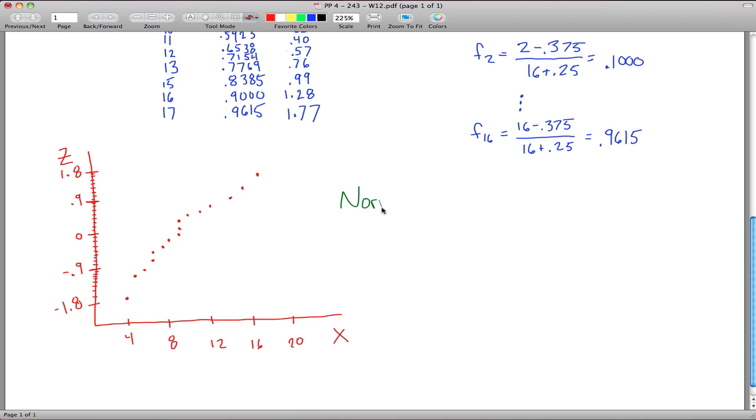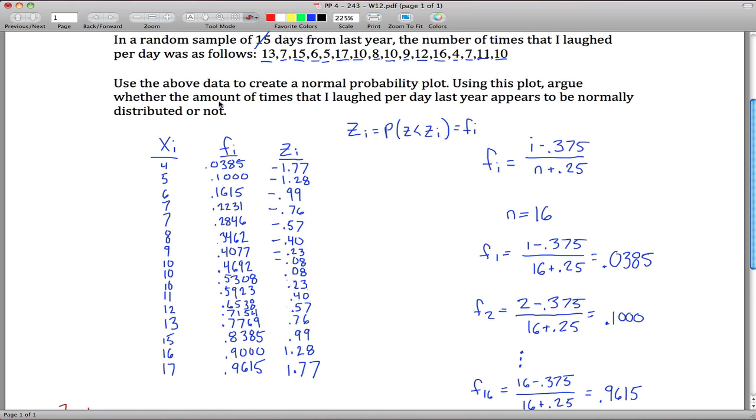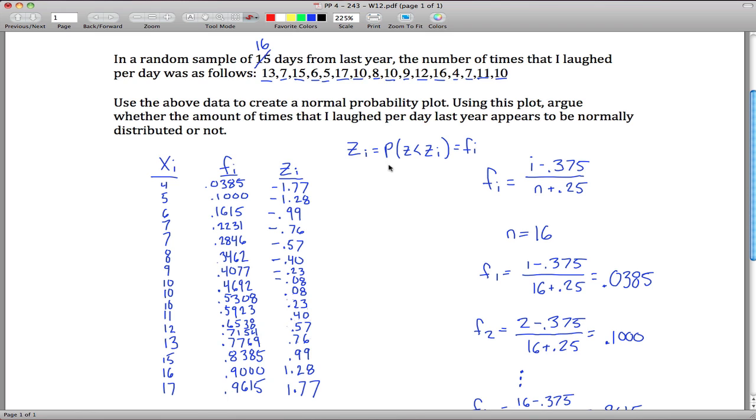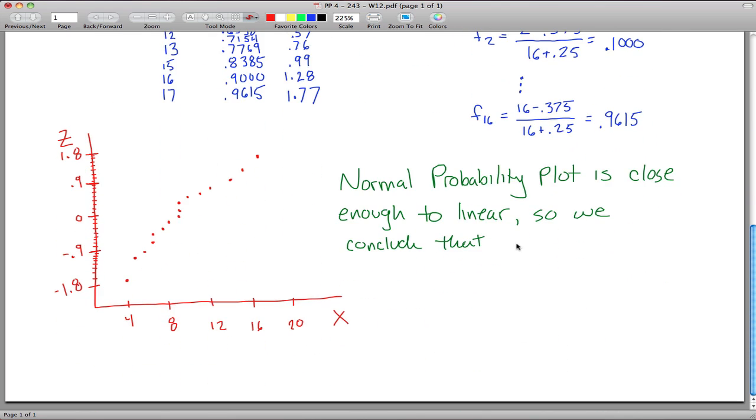I might even write that. I would say normal probability plot is close enough to linear. So we conclude that, what was this talking about, the number of times I laugh per day. Include that the number of times I laugh per day is approximately normal.